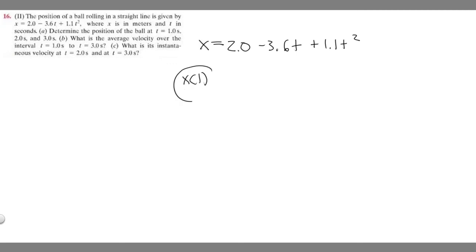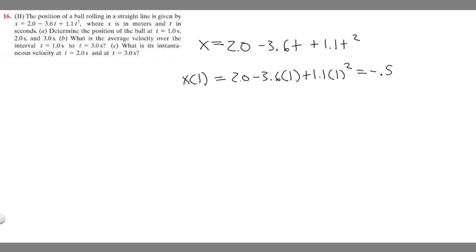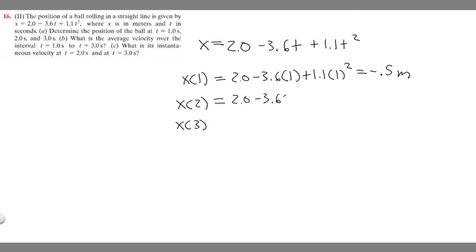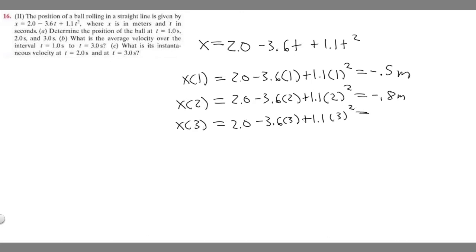So x sub 1 is at time t equals 1: 2.0 minus 3.6 times 1 plus 1.1 times 1 squared, which gives minus 0.5 meters. For x sub 2: 2.0 minus 3.6 times 2 plus 1.1 times 2 squared, which gives minus 0.8 meters. For x sub 3: 2.0 minus 3.6 times 3 plus 1.1 times 3 squared, which gives 1.1 meters. These are the answers to part A.